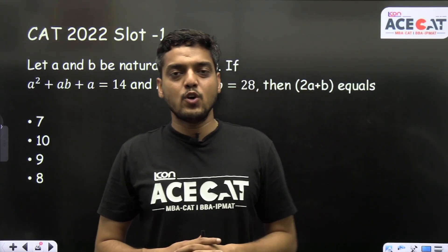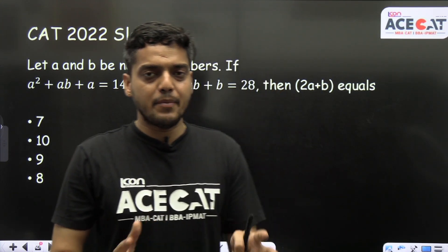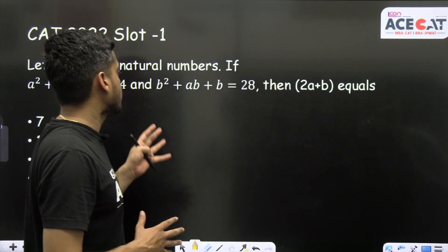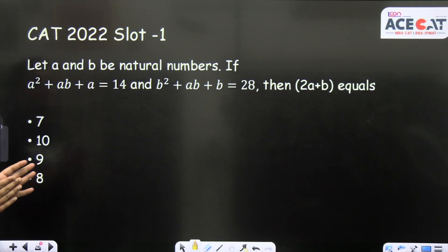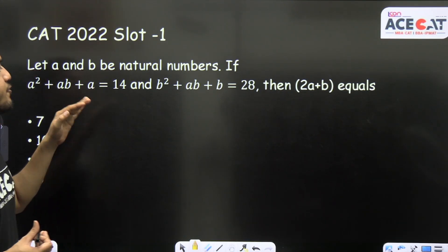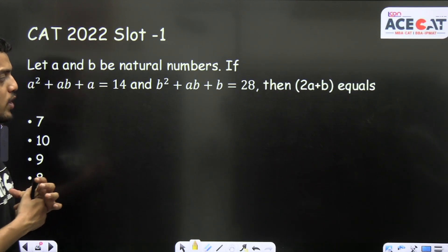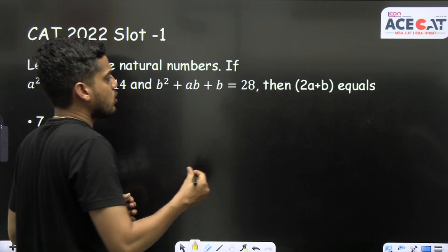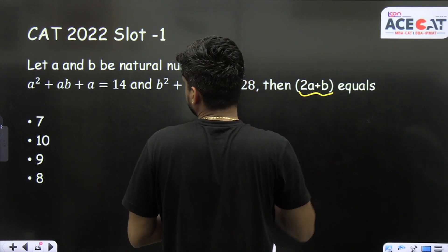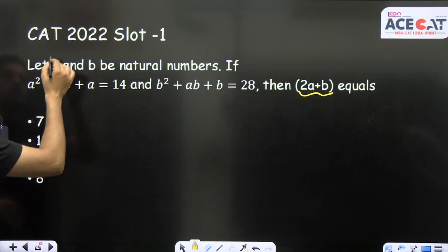Hello students, welcome to AceCat YouTube channel. I am Hankit Sharma and we are going to solve this question from the CAT exam. The question is: a² + ab + a = 14, b² + ab + b = 28. Then what is the value of 2a + b? This is the actual question asked in CAT 2022, Slot 1.